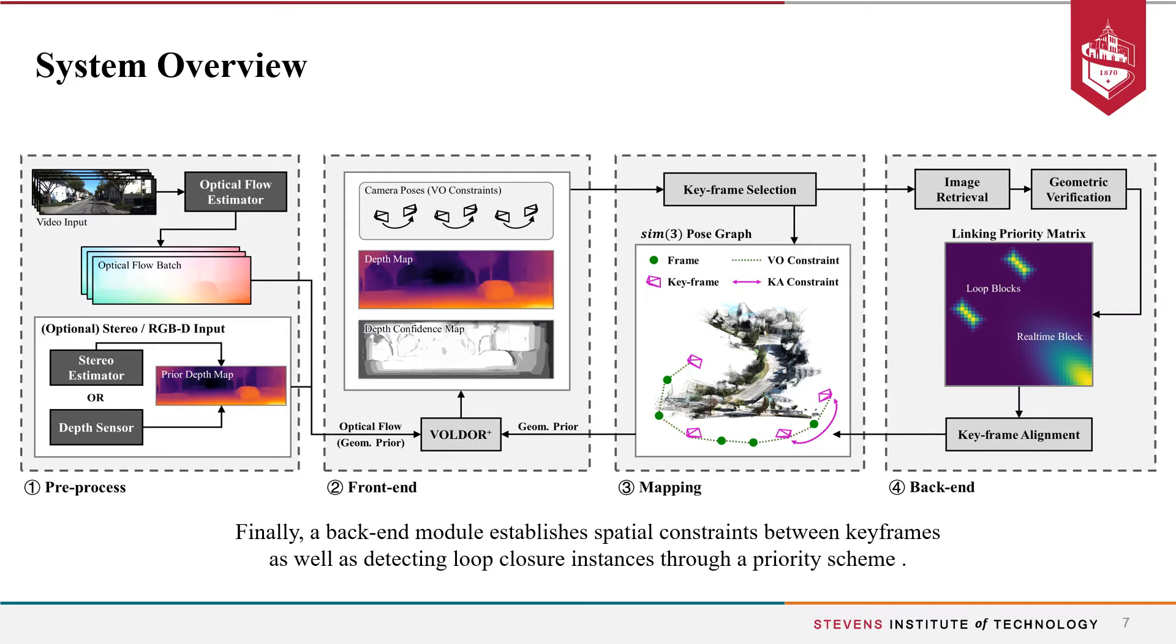Finally, the back-end module establishes spatial constraints between keyframes and detects loop closure instances. These are managed through a priority scheme that prioritizes keyframe pairs from the latest active map that are close enough, as well as detected loop closure instances and their surroundings.